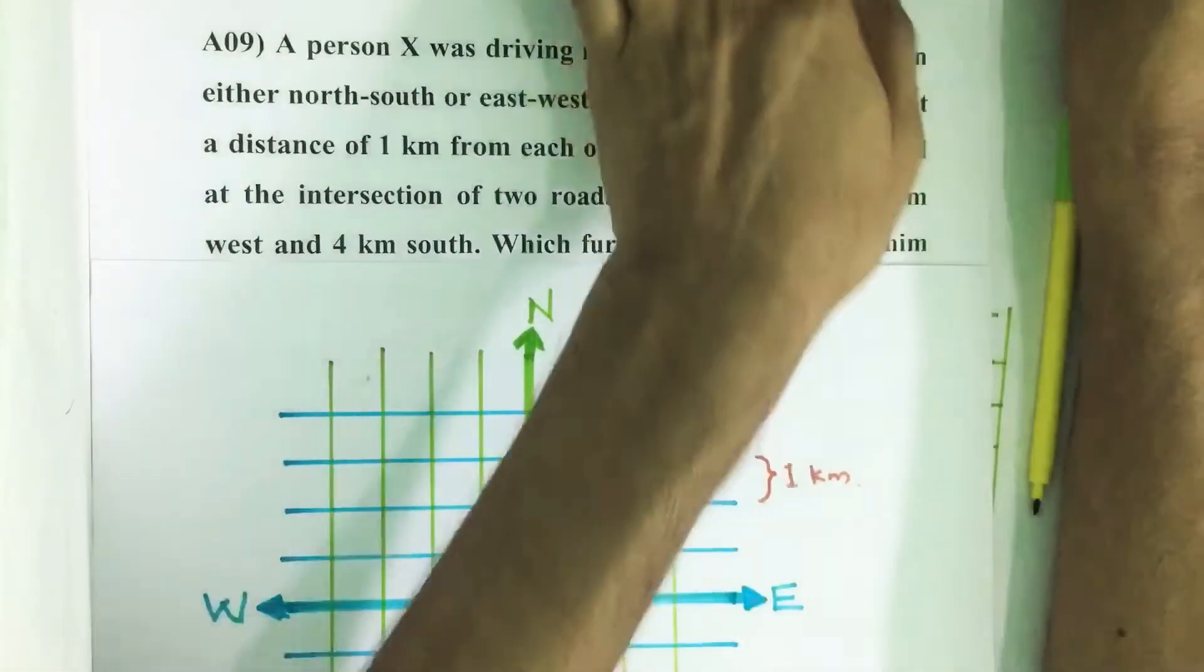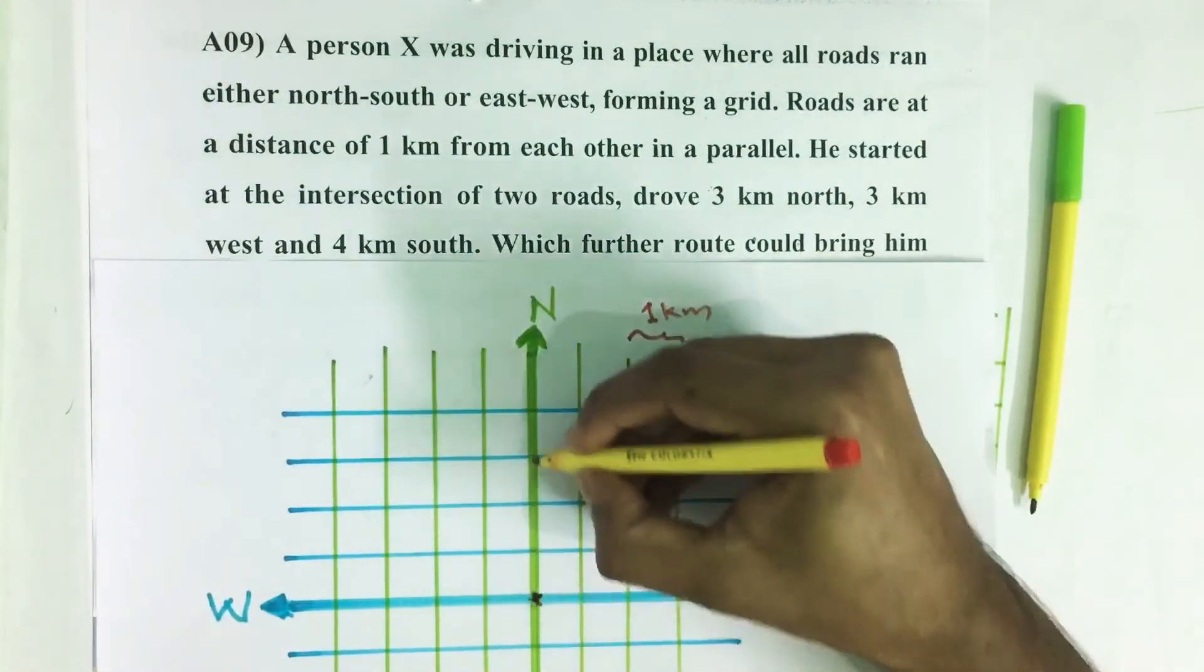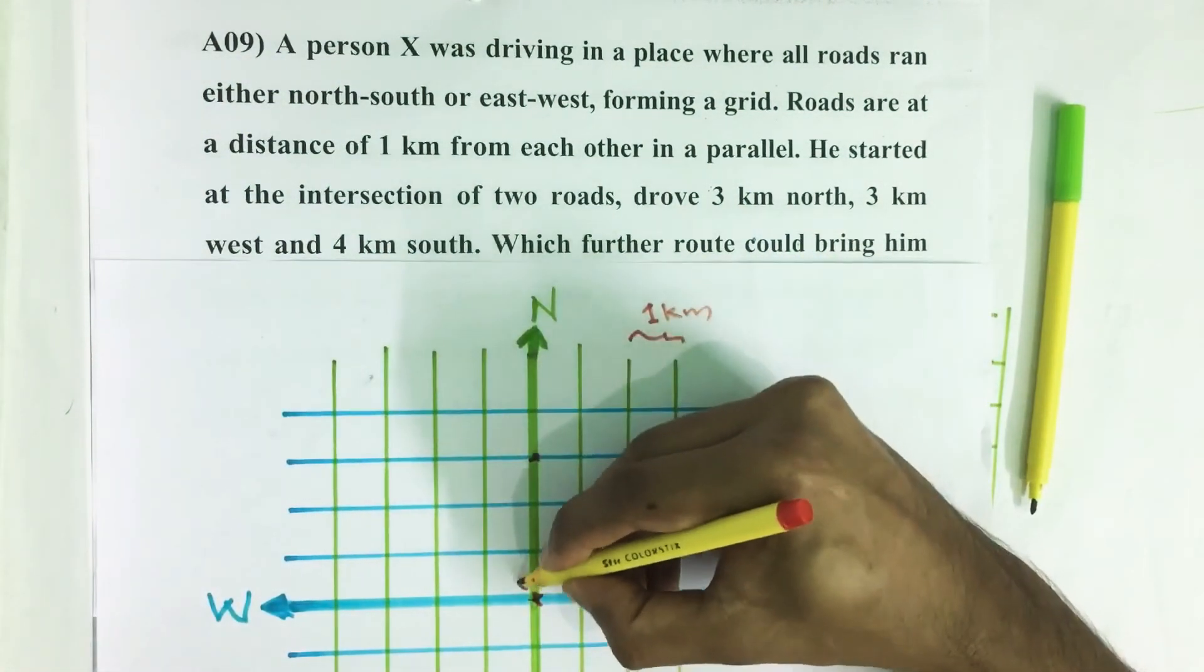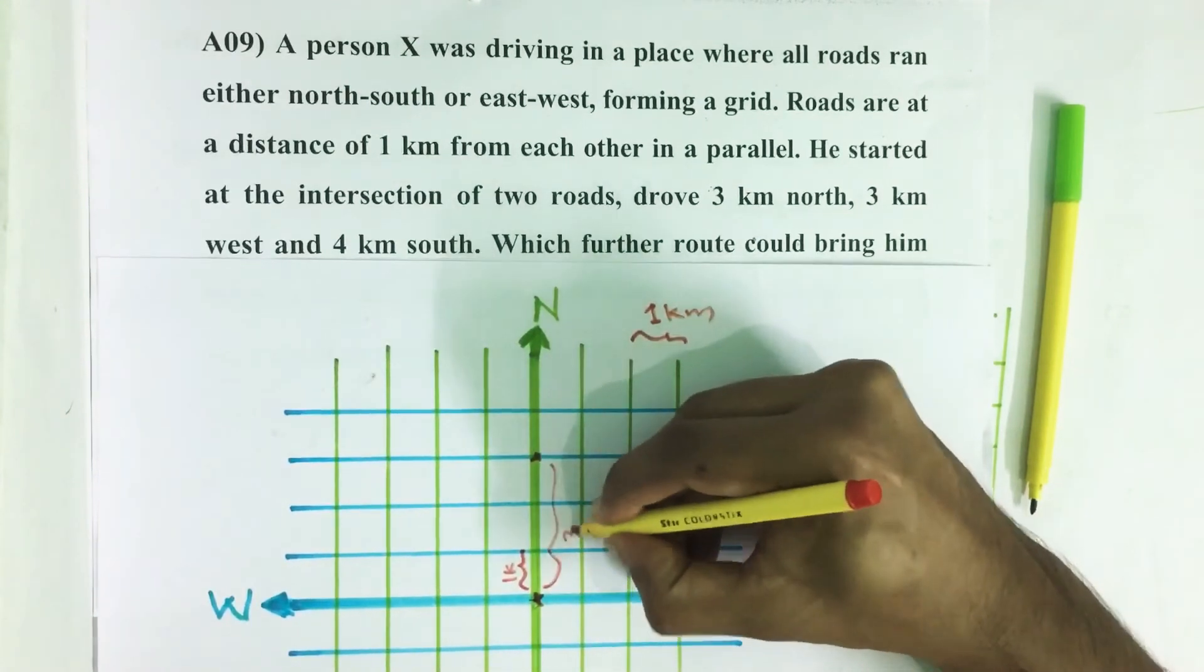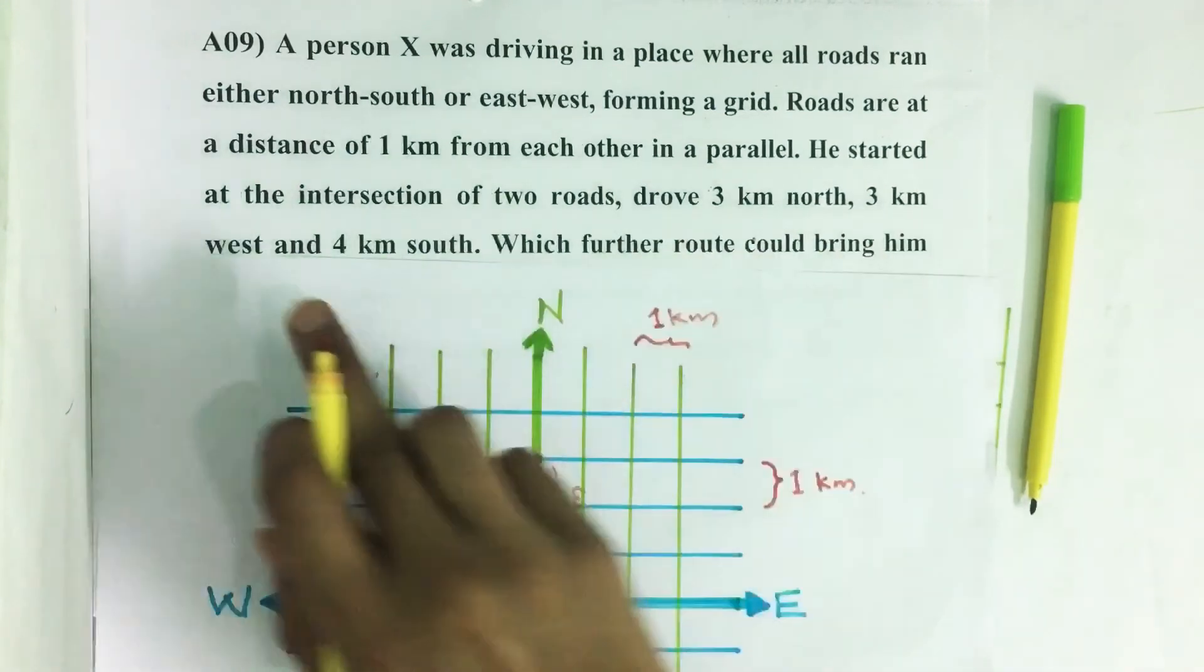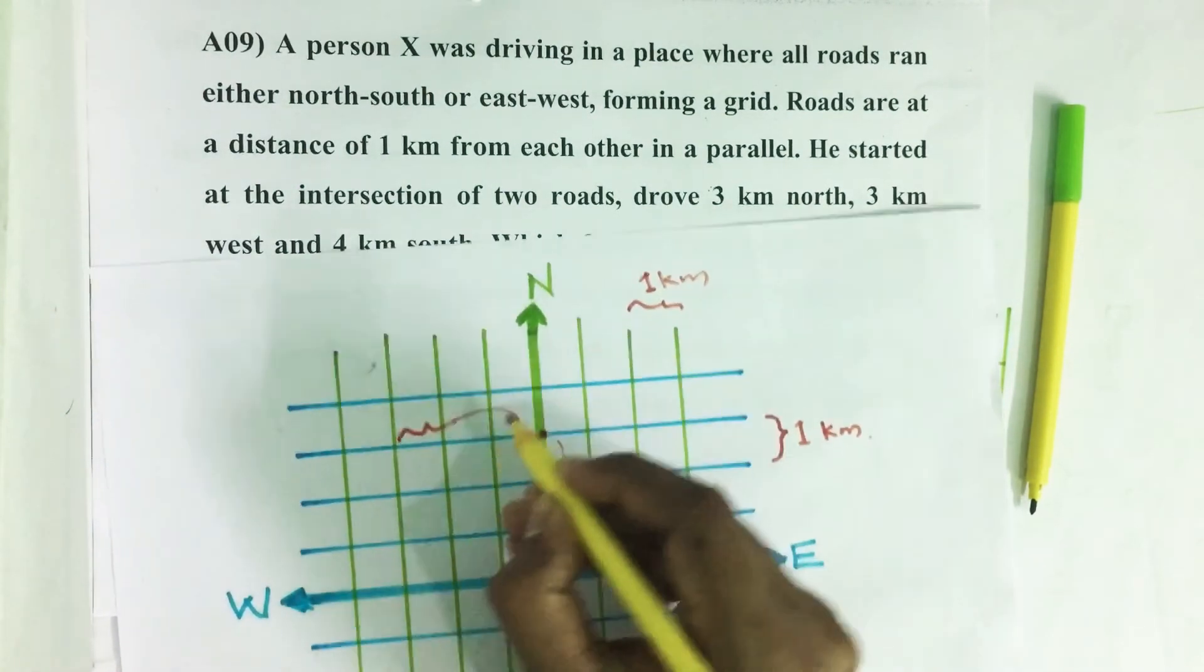He is moving 3 kilometers north - this is 1 kilometer, so total is 3 kilometers. Then 3 kilometers west.